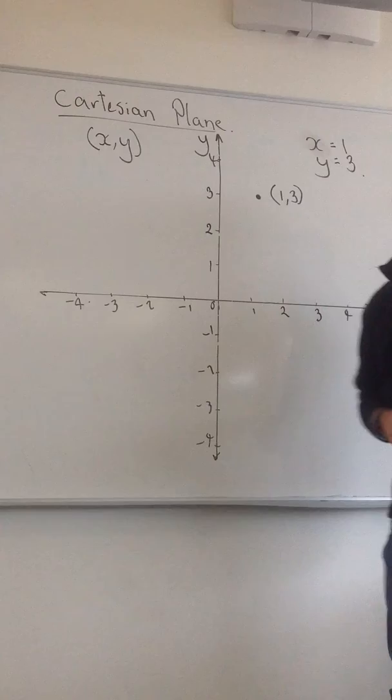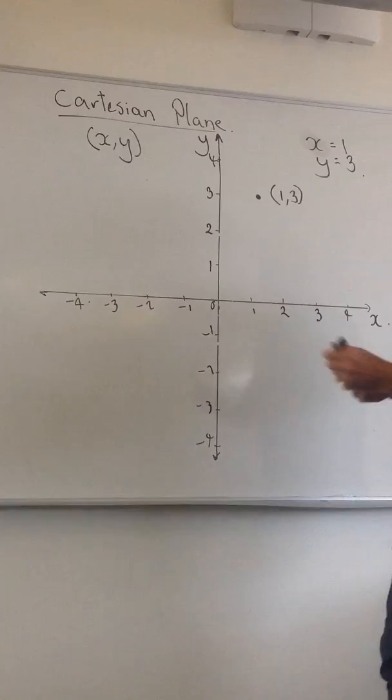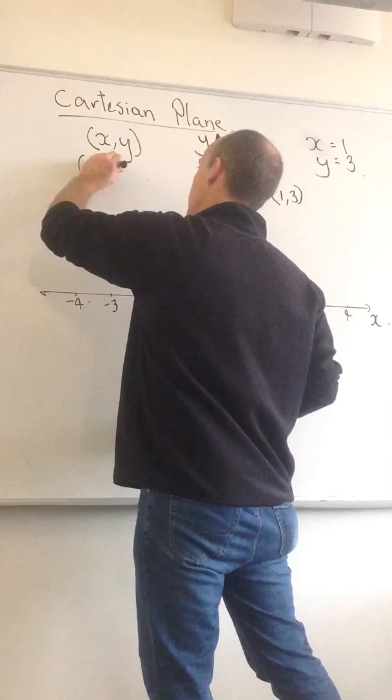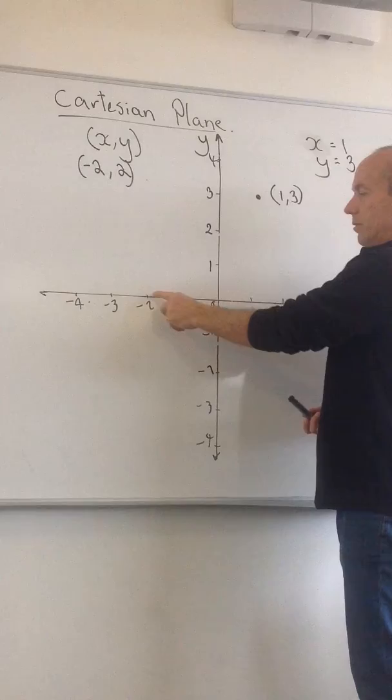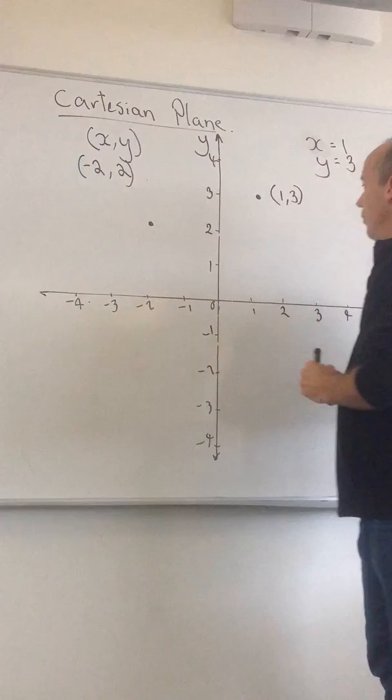Now if I wanted to do the same thing, let's try a different one. If I wanted to represent the point minus 2 and 2, what I would do is go across to x equals minus 2, up to y equals 2, and I would put that value in. And we'll do one more.